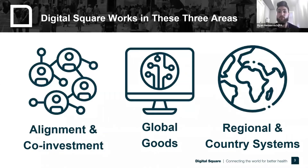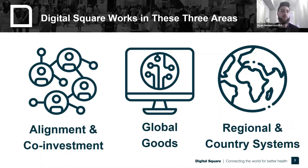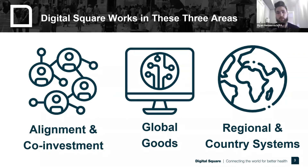We also focus on strengthening digital health governance and advocacy at the global, regional, and country levels, along with aligning stakeholders on all sides of the digital health sector. And through our co-investment, global goods, and digital market readiness work, Digital Square supports the digital health marketplace from all sides. Those are our three main work areas, and now we'll get into discussing how you can start to work with us.